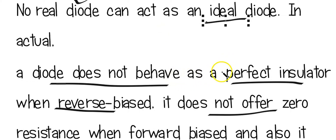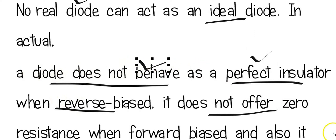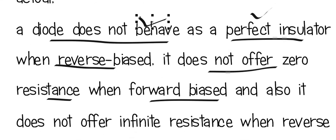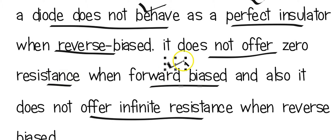Infinite resistance means a perfect insulator when reverse biased. But a diode never behaves like this. A real diode never offers zero resistance — meaning a perfect conductor when forward biased. This is again a limitation.